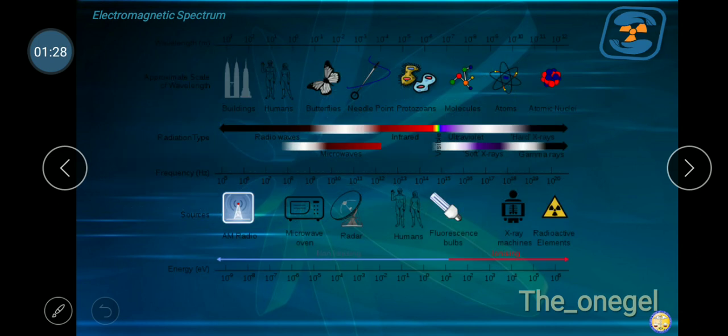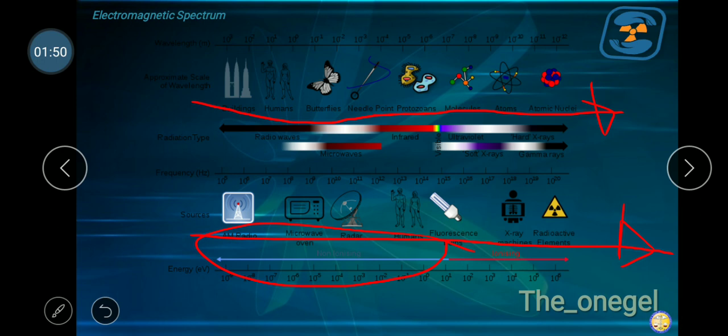If you can see, from a building, human being, butterfly, so on and so forth, this is the continuous types of energy. We call this an Electromagnetic Spectrum. You'll notice here, color blue, that is for non-ionizing, and this one for ionizing radiation. Let's talk about it more in this section.